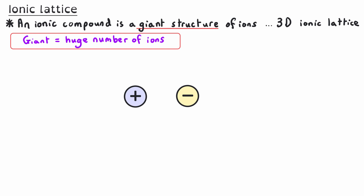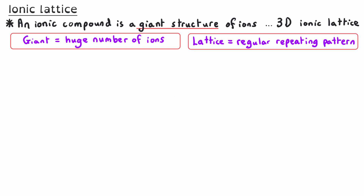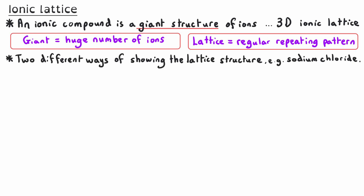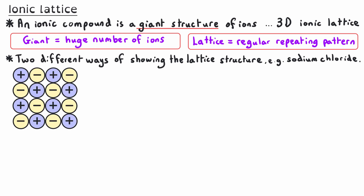The word giant refers to the fact that we don't just have one positive ion and one negative ion — we've actually got a huge number of ions. The word lattice refers to the fact that we have a regular repeating pattern throughout the structure. If we start with a two-dimensional slice through an ionic compound, you can see that we've got alternating positive and negative ions in a regular pattern.